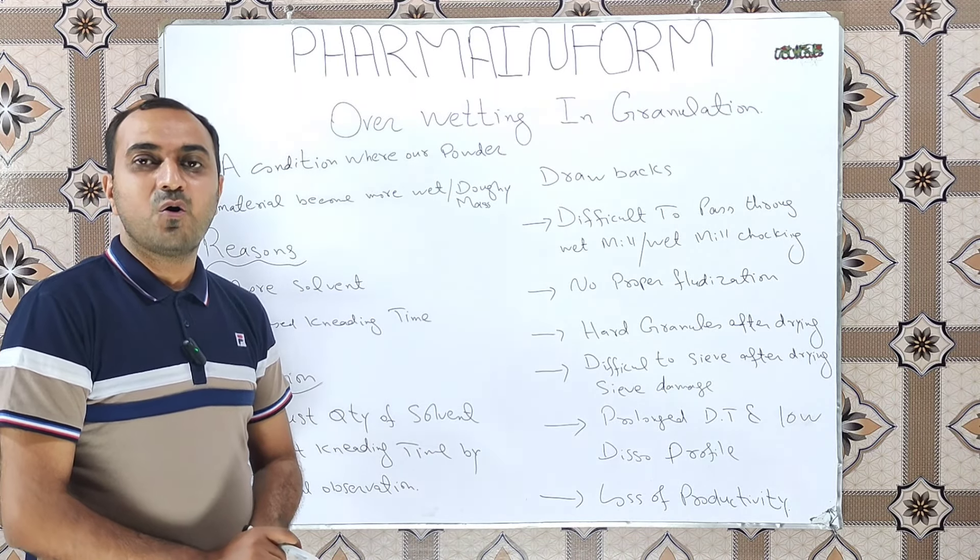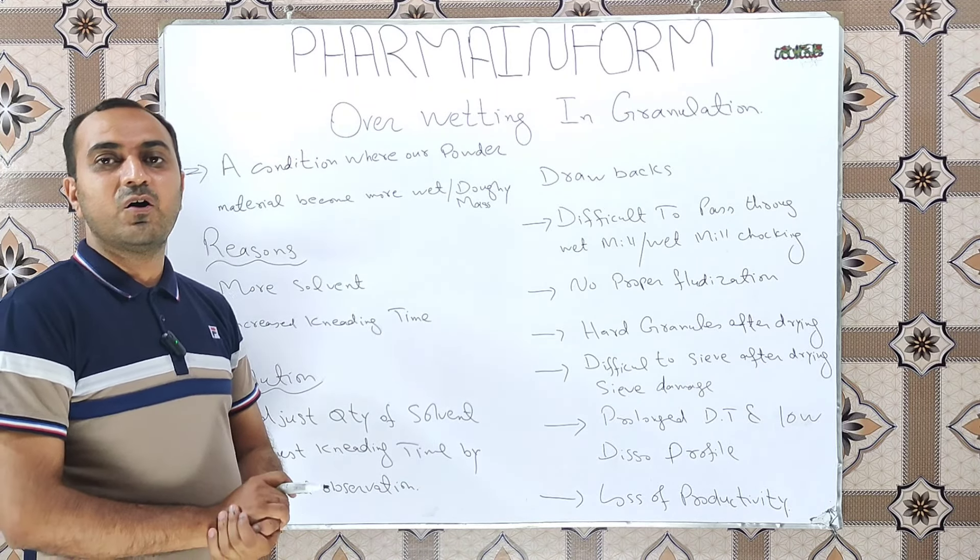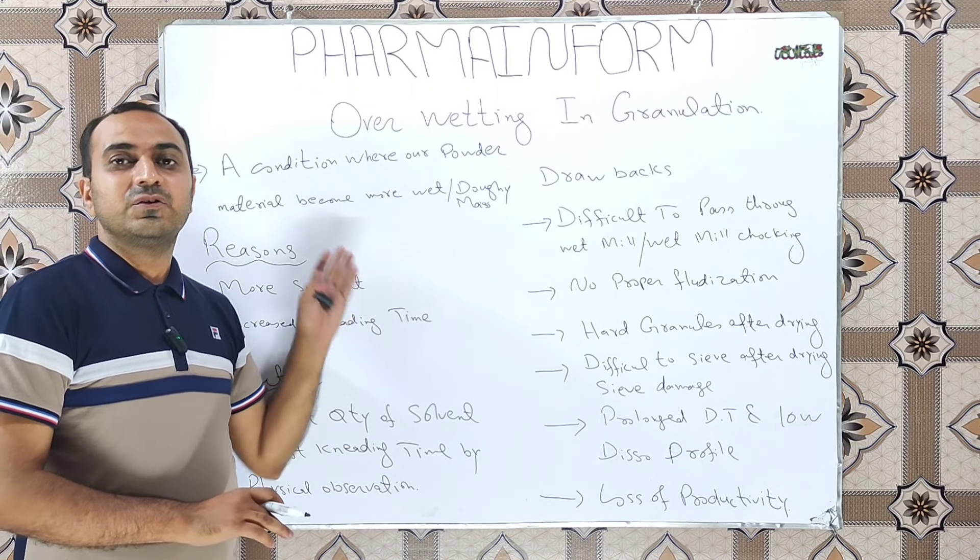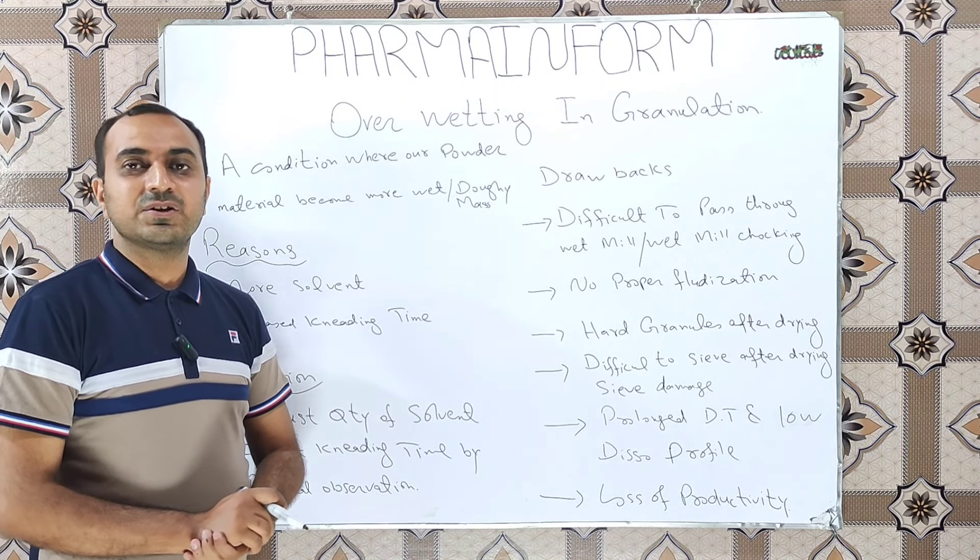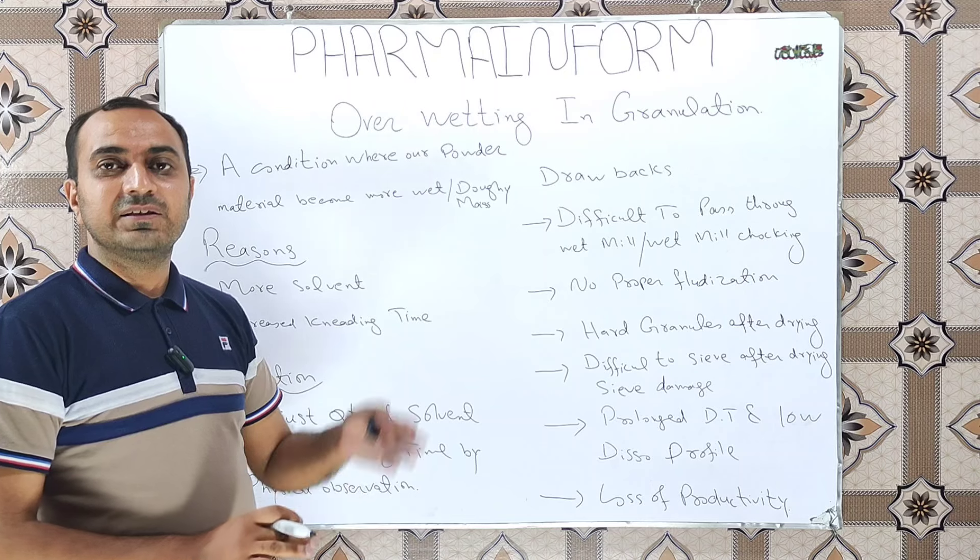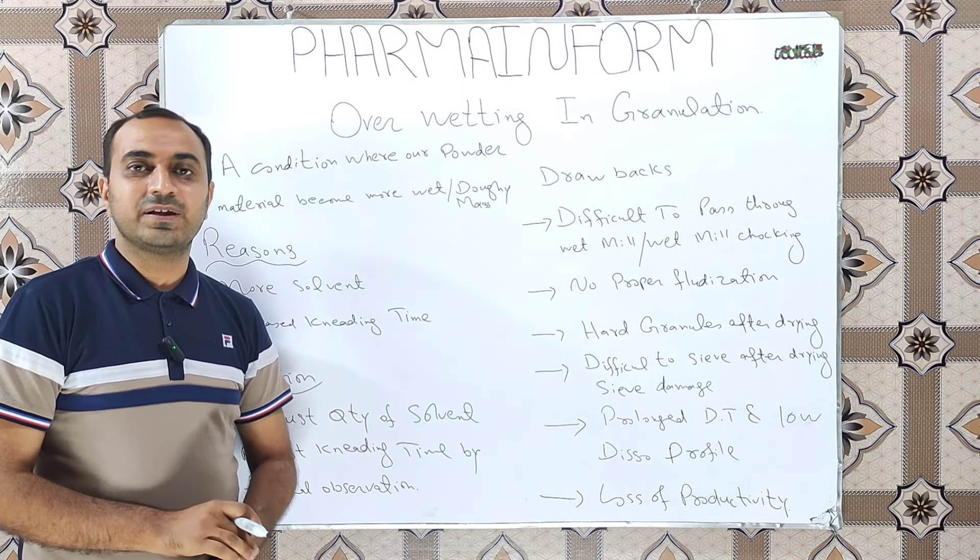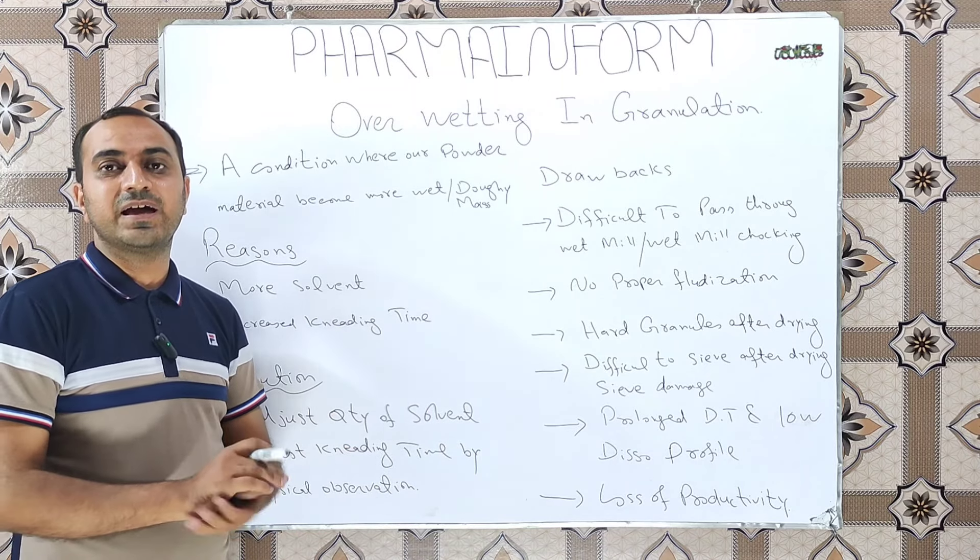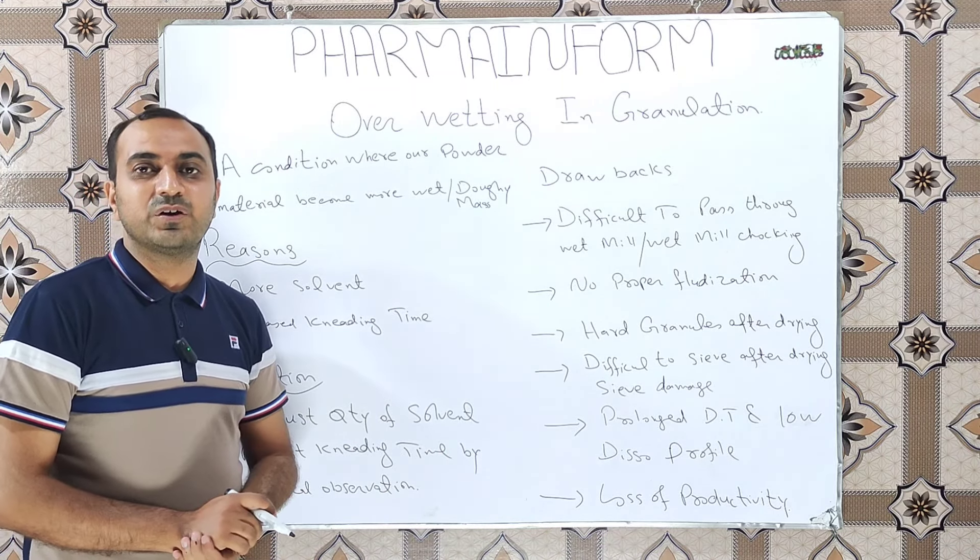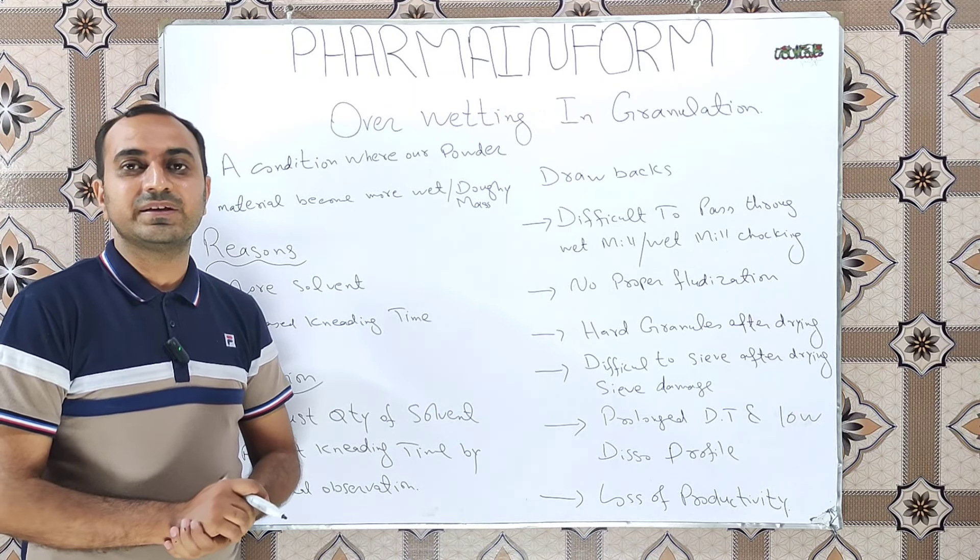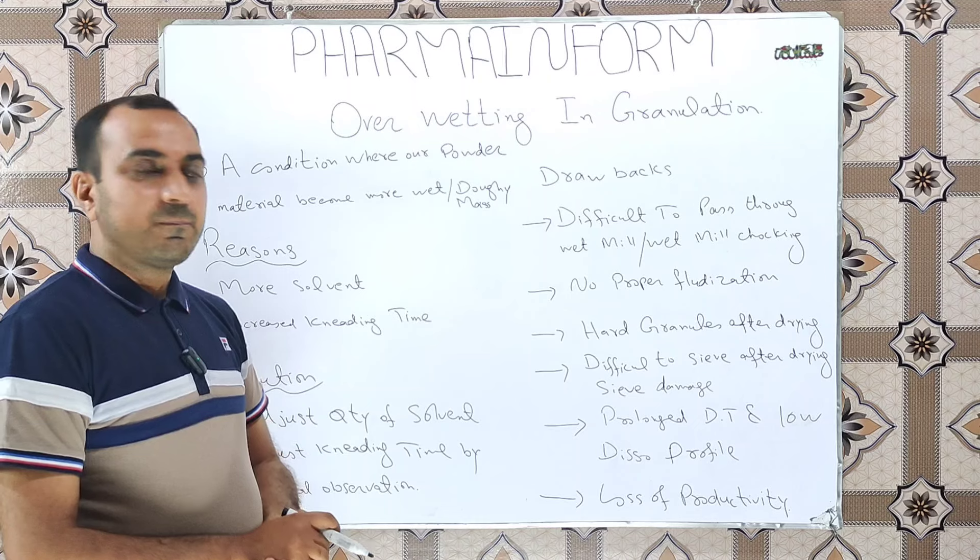Next is how to prevent overwetting. To prevent the overwetting defect, always use the optimum quantity of solvent and add more solvent after physically observing the condition of powder material in the rapid mixing granulator, plow mixer, or ribbon mixer. Next is kneading time. Always adjust the kneading time by physically observing the condition of powder materials.